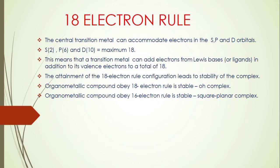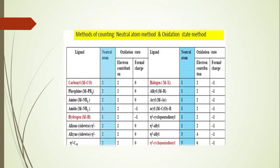If it is a square planar complex, it should obey the 16-electron rule. The 18-electron count can be calculated by two methods: the neutral atom method and the oxidation state method. This table explains the contribution of each ligand and its formal charge.